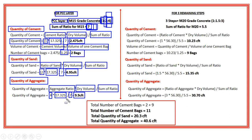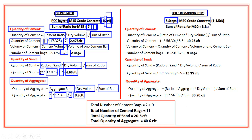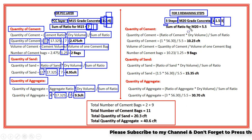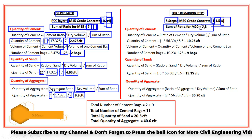This covers the quantity of cement, sand and aggregate for the PCC layer using M15 grade of concrete. Next is to calculate the quantity of material for the remaining three steps, which use M20 grade of concrete. The mix ratio of M20 is 1:1.5:3, where 1 is cement, 1.5 is sand and 3 is coarse aggregate. The sum of ratios is 5.5.